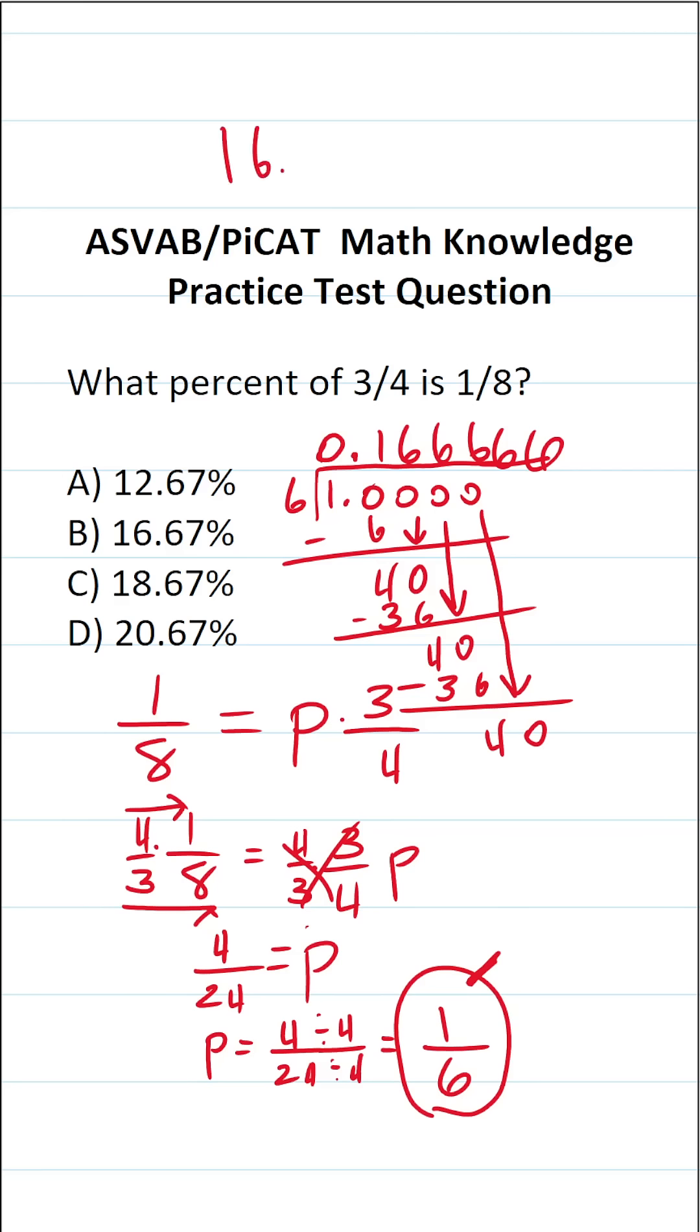we could write this as 16.67%. So this one is going to be B.